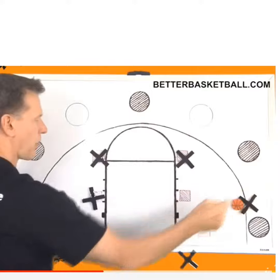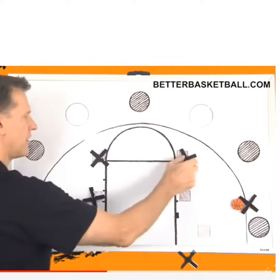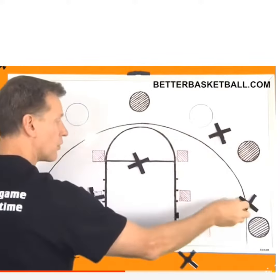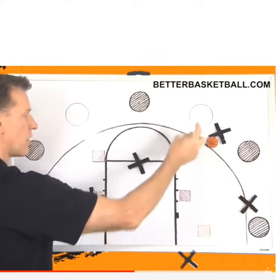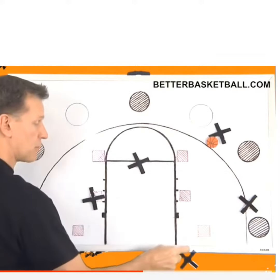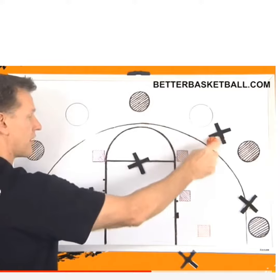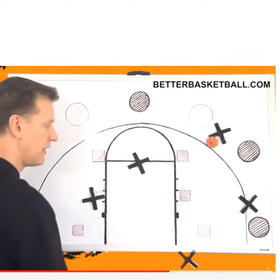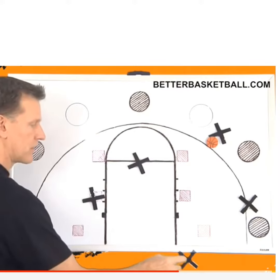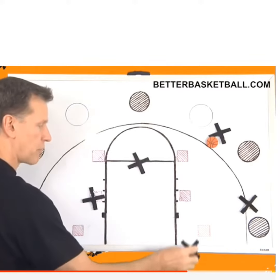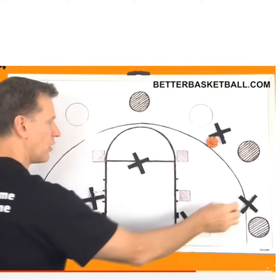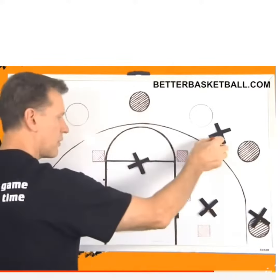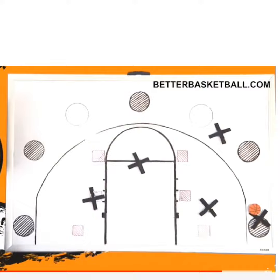The ball is inbounded here as this player breaks out. This player screens for this player, and we're passing up this way. It is possible to pass from here to there if this player is not open. Just get the ball inbounds, because the play is for the inbounder, who, after passing, steps in and waits. This player comes and screens in, and we throw back here for the three-point shot.